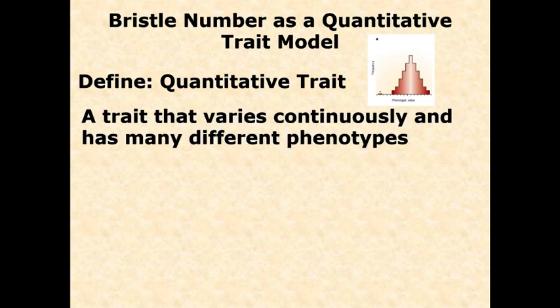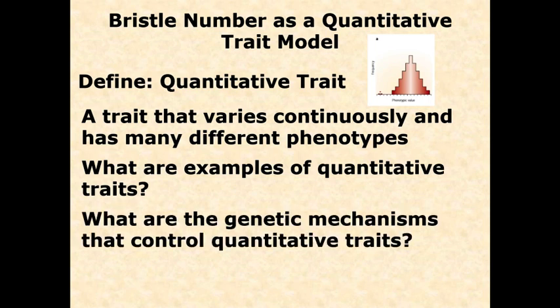Quantitative traits are complex. Their genetic underpinnings — the networks that dictate what the phenotype will be — are very complicated. Almost always they are polygenic, meaning there are many genes, and sometimes a dozen or more genes all contribute to a particular trait. For height in humans, there is no single 'tall gene.' Several genes each play a role, and each may have multiple alleles, epistatic interactions, co-dominance, or incomplete dominance.